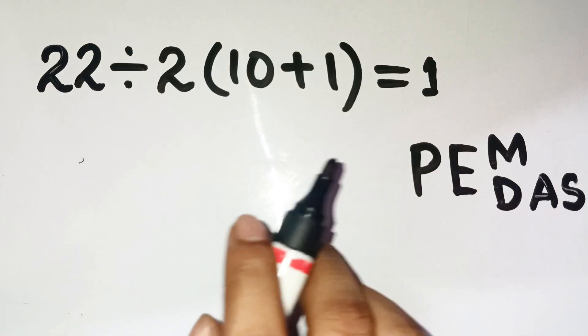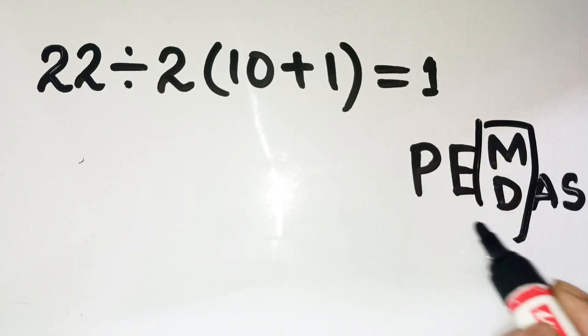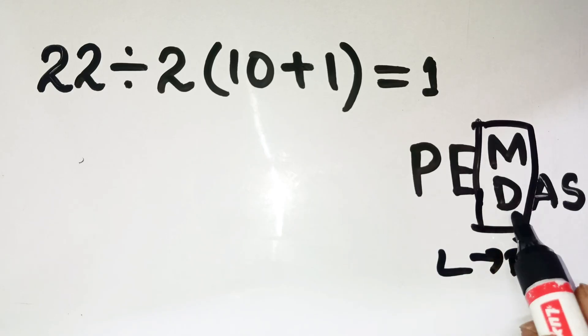Now, moving on to the next point, here's the part people miss. Multiplication and division are on the same level. They're done from left to right, not multiplication before division. That's where so many go wrong.